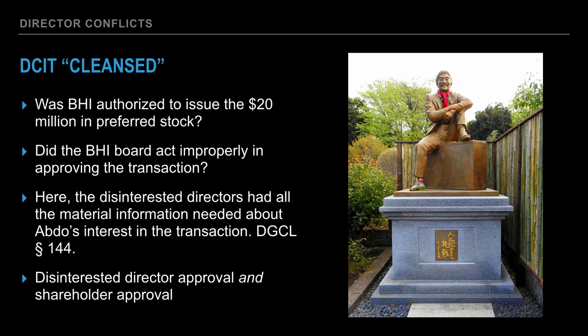Process, it would seem, is the gold standard. The Section 144 safe harbor for an interested transaction will exist if material facts are known to the board and the board, in good faith, authorized the transaction by a majority of disinterested and independent directors. The judicial review, then, is just a review of the process: did the board have the information? Did the board approve the transaction? Was the approval by a majority of disinterested and independent directors? The only examination the court will take is whether the process was sufficient to protect the disinterested shareholders.